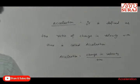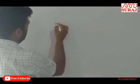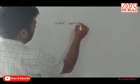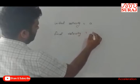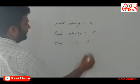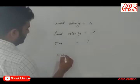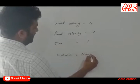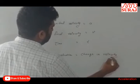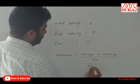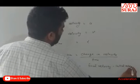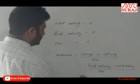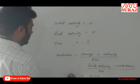Let us consider that a body starts to travel with velocity u, so initial velocity is equal to u. After some time, final velocity is equal to v, and time taken is t. Acceleration is equal to change in velocity upon time — that is, final velocity minus initial velocity divided by time: a = (v - u) / t.